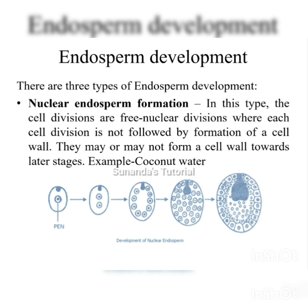In nuclear endosperm formation, cell division is free-nuclear, meaning each cell division is not followed by the formation of a cell wall. The cell wall may or may not form towards later stages, as seen in coconut water, which is a typical example of free nuclear endosperm.